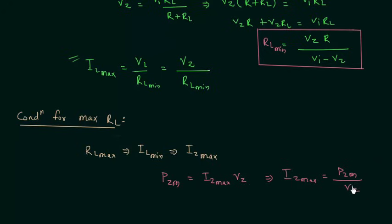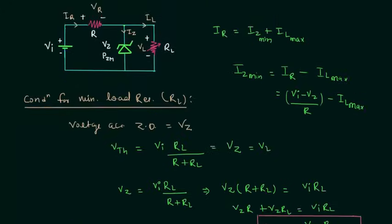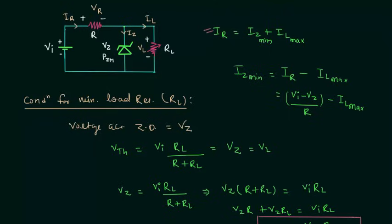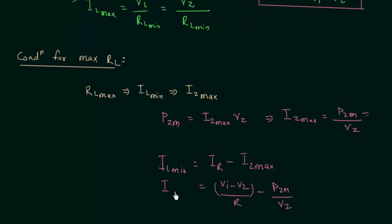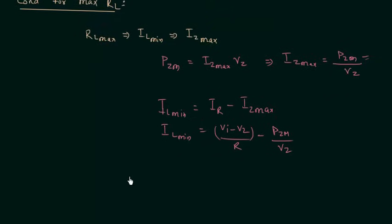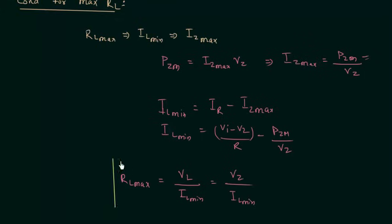Vz is a fixed value and to have maximum power dissipation, IZ must be maximum. These two values will always be given in the problem, so we can calculate IZ maximum equals Pzm divided by Vz. From this, IL minimum equals IR minus IZ maximum. Now, using IL minimum, we can calculate the maximum value for load resistance: RL maximum equals VL divided by IL minimum, and since VL equals Vz, we have Vz divided by IL minimum.